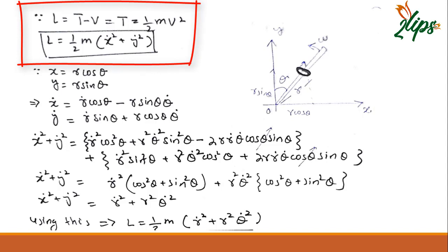This is equal to T minus V. Since in the question it is given that it is a force-free region, there is no potential field, no potential energy. So I can write this Lagrangian as half m V squared, where V is the velocity of that bead.